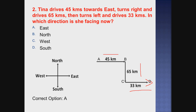From the diagram itself we can conclude that she is facing east. North is at the top. The arrow is pointing right - that is east. So Tina is facing east direction now. The correct option is A, that is east.